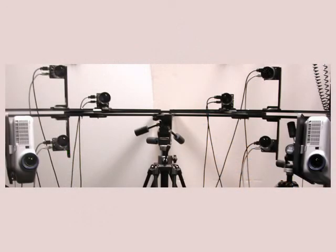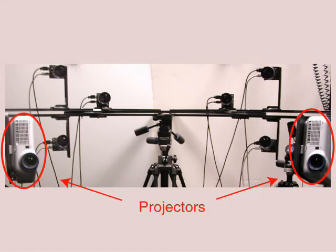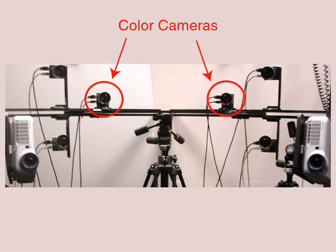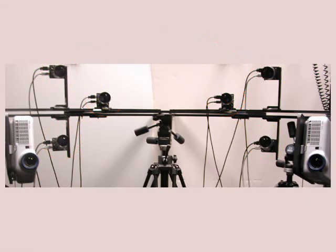Our system consists of a set of video cameras and data projectors. Two DLP projectors are used to shine stripe patterns onto a subject. Four black and white cameras are used to reconstruct 3D shape from two sides of the face. Two color cameras are used to capture surface texture. The cameras are synchronized with the projectors at 60 frames per second and recorded at a resolution of 640x480.